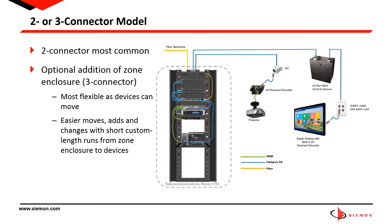The most common configuration for structured cabling systems is a two-connector model, where there is a patch panel in the telecommunications room and an outlet adjacent to the device with a patch cord at each end. However, to allow greater flexibility and to simplify moves, adds, and changes, a zone enclosure can be added in which the permanent cabling is installed between the telecommunications room and the zone enclosure, and then changes are limited to a much smaller and less disruptive scope between the zone enclosure and device outlets only. Note that in addition to the cable itself, all connectivity such as outlets, housings, and enclosures must be plenum rated if located within an air handling space.